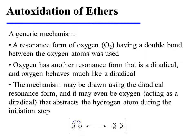In the preceding step, a resonance form of oxygen having a double bond between the oxygen atoms was used. Oxygen has another resonance form, though — this resonance form is a diradical. Oxygen behaves much like a diradical in many instances. Therefore, the mechanism may be drawn using either resonance form. It may even be oxygen acting as a diradical that abstracts the hydrogen atom during the initiation step.